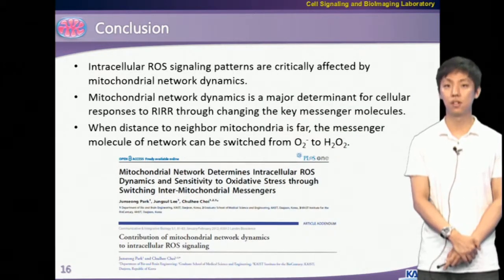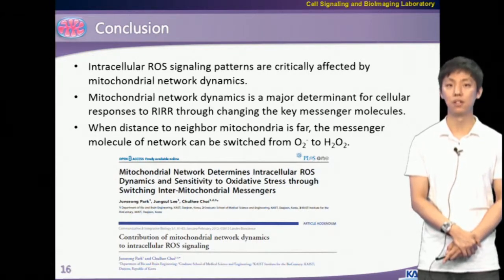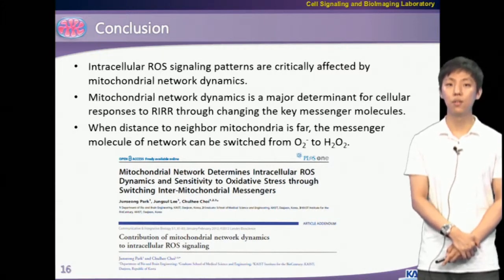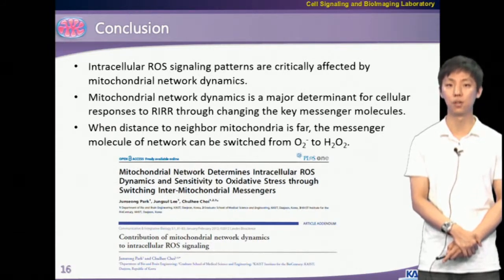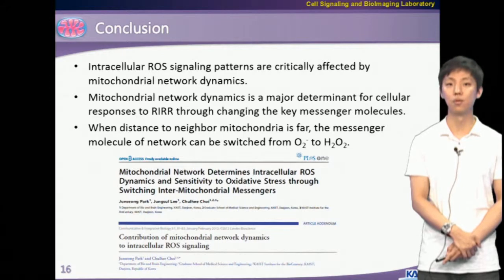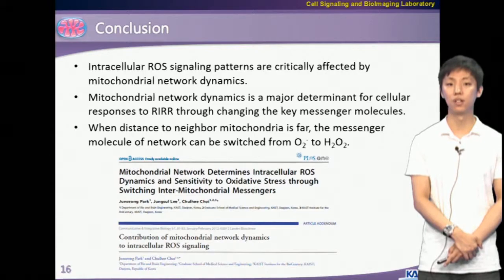In conclusion, our simulation results revealed that mitochondrial network dynamics determine the identity of inter-mitochondrial ROS signaling. We show that the degree of ROS propagation, effect of each antioxidant enzyme, and response to oxidative stress deciding the ultimate fate of a cell can be changed by the characteristics of mitochondrial network dynamics. These results were published in PLOS ONE, and it was invited to a review article in Communicative and Integrative Biology. Thank you for your attention.